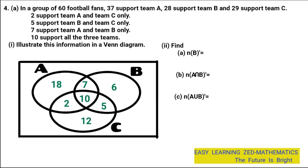Question A2: find the number of fans of B complement — that is, fans not in set B. Set B contains 7, 10, 5, and 6. Any number outside circle B is in the complement: 18, 2, and 12. Adding these: 18 plus 2 gives 20, plus 12 gives 32. So 32 is the number of fans who do not support team B.